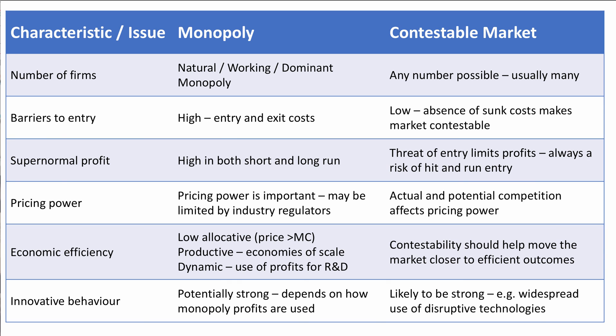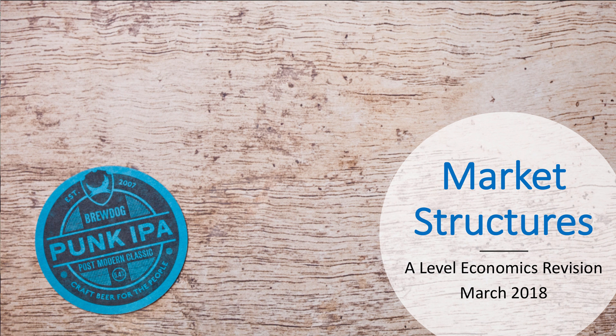Another contrast is between monopoly and contestable markets — we have separate videos on contestable markets on our YouTube channel. In a contestable market there can be any number of firms; both actual competition and the threat of competition affect firm conduct. Contestability tends to be more efficient than monopoly, but both can have strong levels of innovation — monopoly profits fund research, while in contestable markets innovation is how challenger firms disrupt incumbents. For revision, print off the final slides comparing different market structures and the contrast between monopoly and contestable markets.